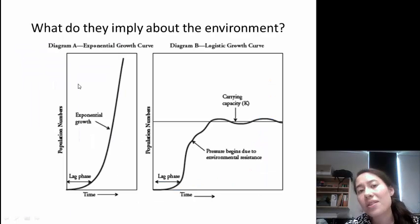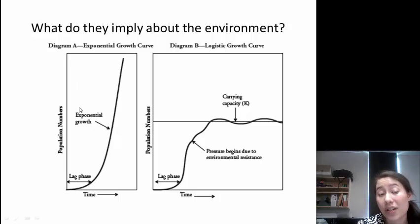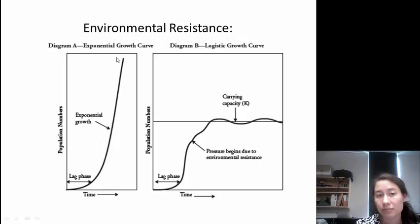So the big question here is what do these imply about the environment? The big difference between A and B is that in A we just have growth and growth and growth, and in B the pressure begins due to environmental resistance. In B, we have something in the environment that is causing this number of organisms to level off and to not be able to increase indefinitely. And in A, those environmental factors just don't exist. They're able to increase indefinitely. This environmental resistance is going to lead to our carrying capacity.